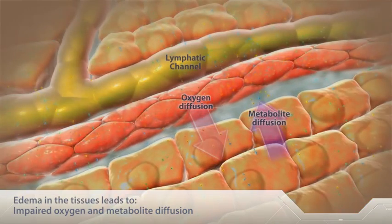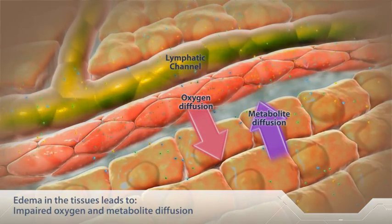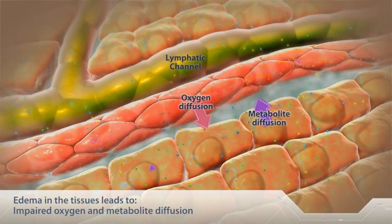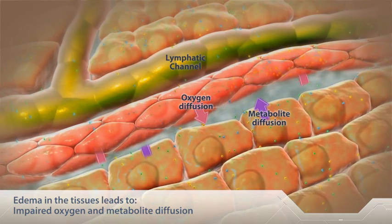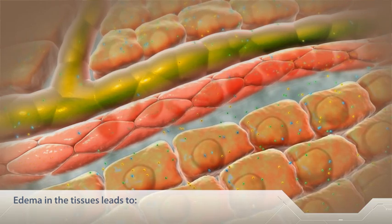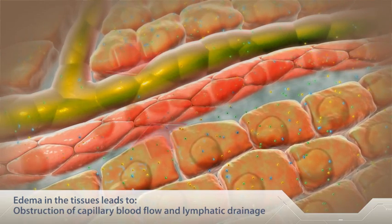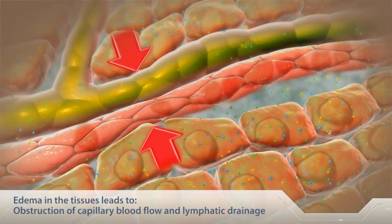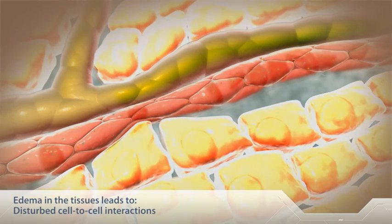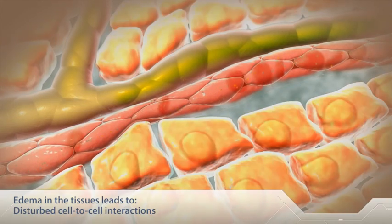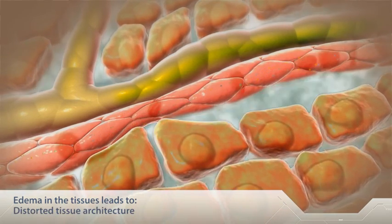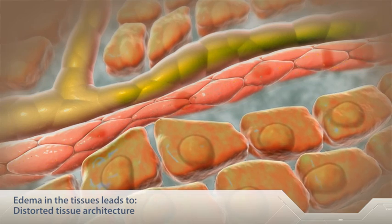Edema in the tissues leads to impaired oxygen and metabolite diffusion, obstruction of capillary blood flow and lymphatic drainage, disturbed cell-to-cell interactions, and distorted tissue architecture.